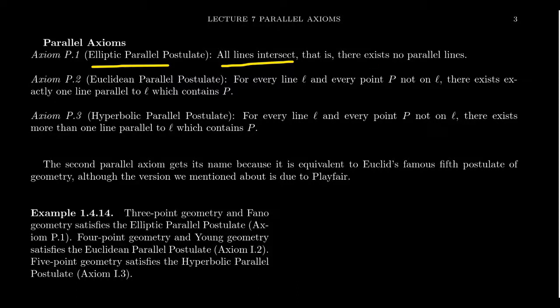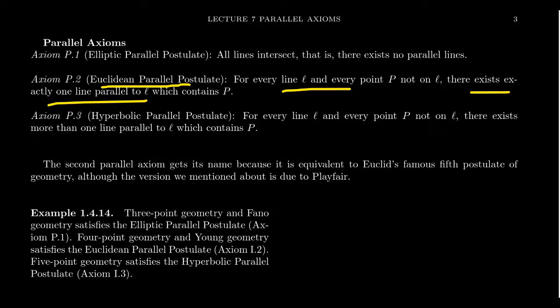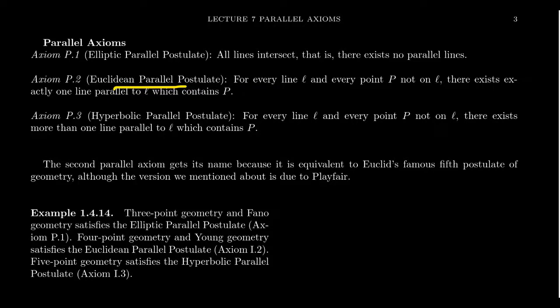Axiom 5 of Fano geometry was exactly this — the elliptic parallel postulate. The Euclidean parallel postulate says that for every line and every point not on that line, there exists exactly one parallel line through that point. This was exactly Axiom 5 of Young geometry. This is known as the Euclidean parallel postulate because it is equivalent to Euclid's famous fifth postulate of geometry.